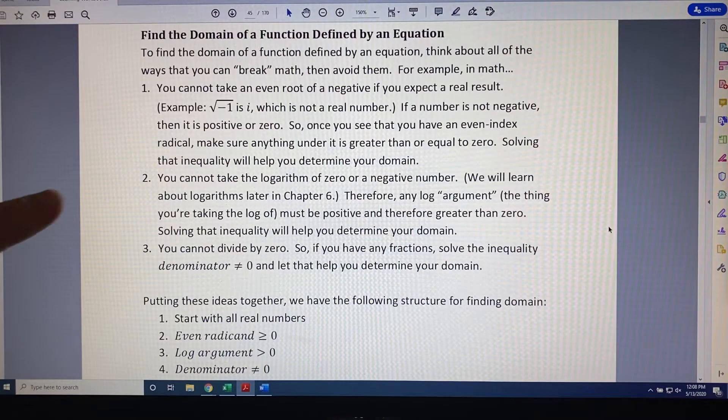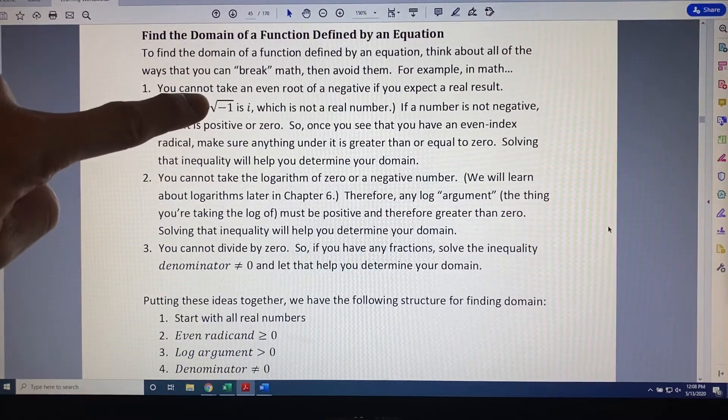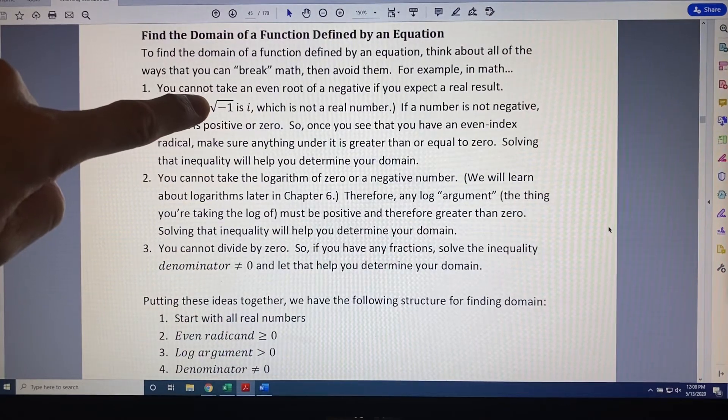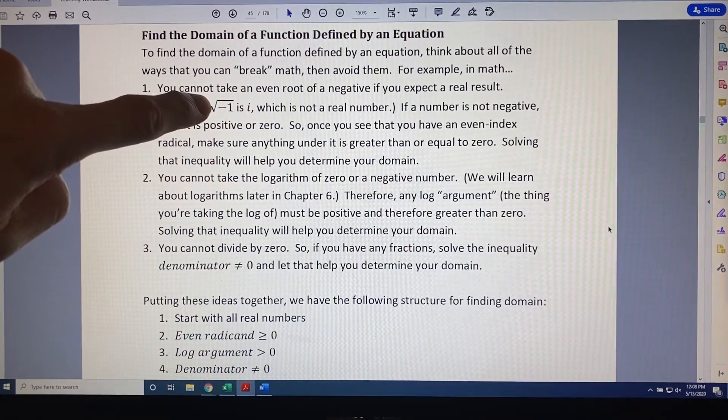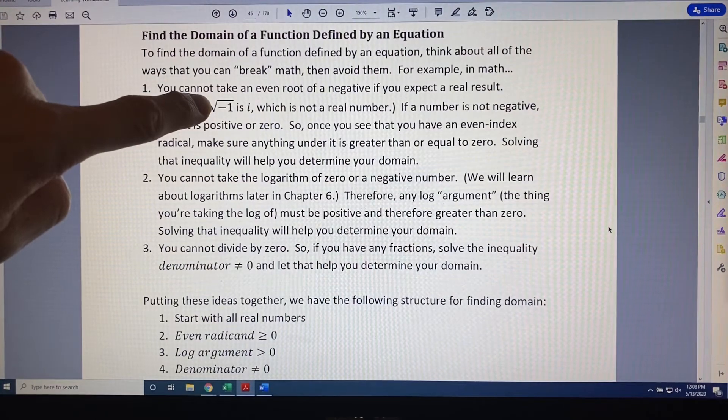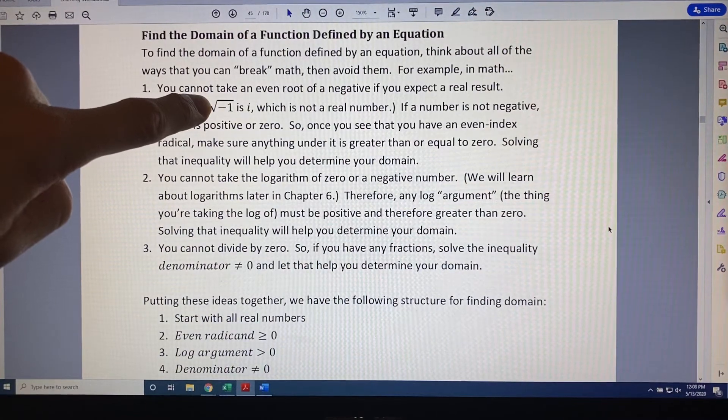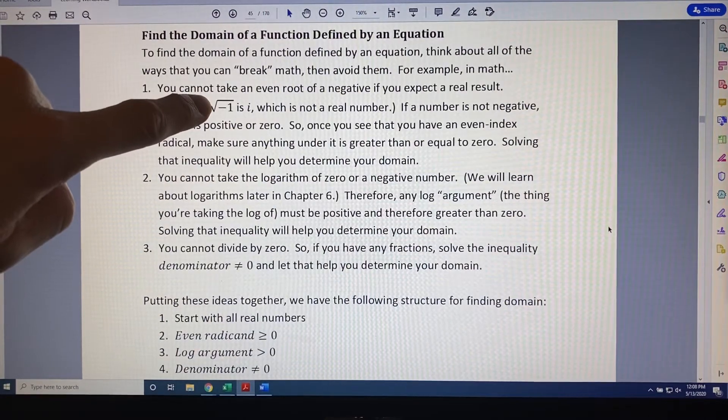And if you do not remember what the word index means, index is the little number that sits right on top of the v part of a root. If no number is written, that number is a hidden 2. But it would be a 4 for a 4th root, a 6 for a 6th root, and so on. So if it's an even number, that means you're dealing with an even index radical.